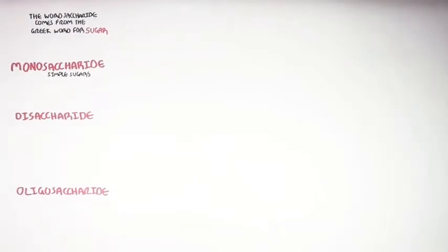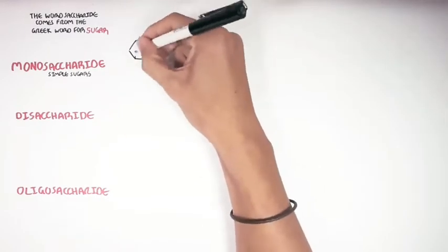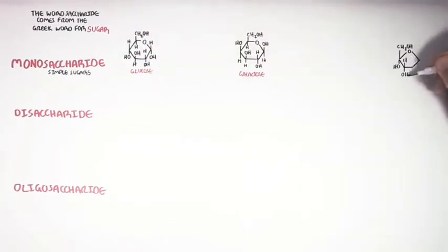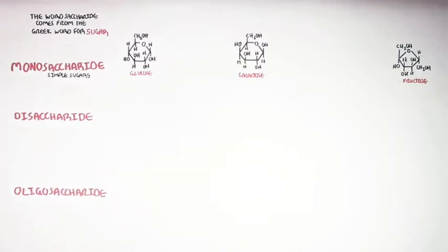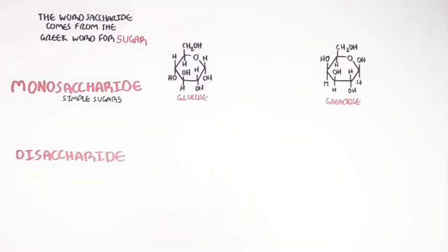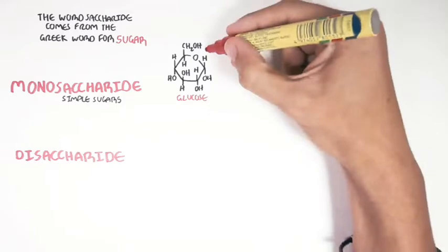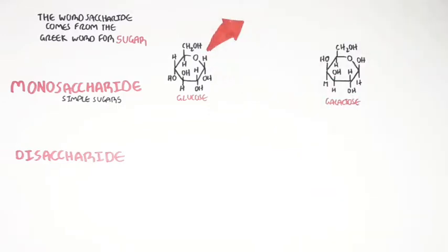The three main monosaccharides in the human diet include glucose, galactose and fructose. These structures contain carbons, hydrogens and oxygens. Glucose is the main source of energy for humans. Here you can see glucose in its cyclic chemical form. What's important to know about glucose is that it contains six carbon atoms.